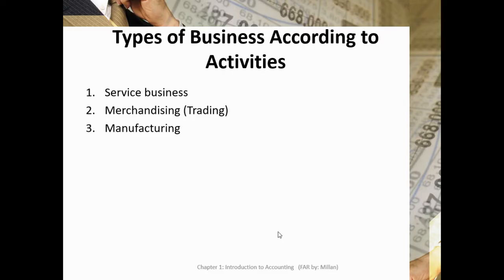A merchandising business or trading business is one that buys and sells goods without changing their physical form. Examples include general merchandise resellers such as grocery stores, department stores, hardware stores, pharmacies, online stores, and sari-sari stores. Also distributors and dealers like rice wholesalers, vegetable dealers, and second-hand car dealers. These are businesses that buy and sell goods without changing the physical form.